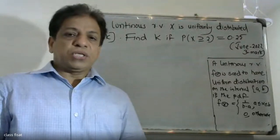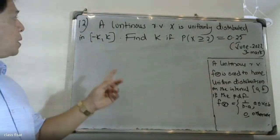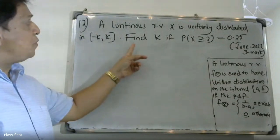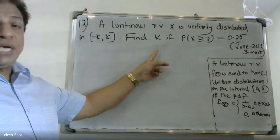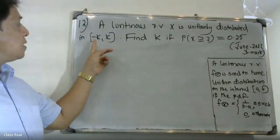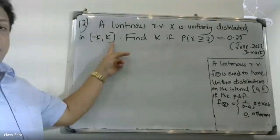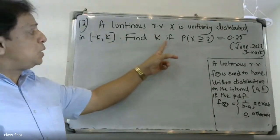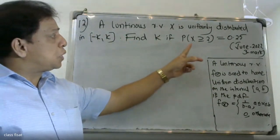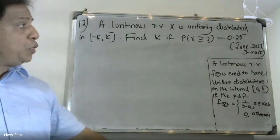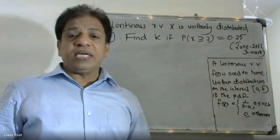Good morning, students. At the third university problem: a continuous random variable x is uniformly distributed in the interval minus k, k. Find k if the probability of x greater than or equal to 2 is 0.25. This is a June 20th, 2020 exam question.